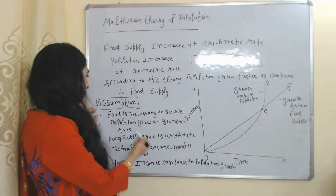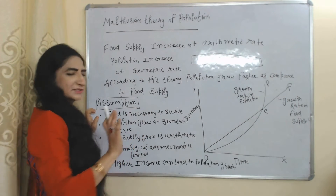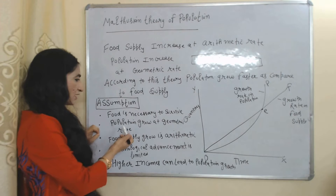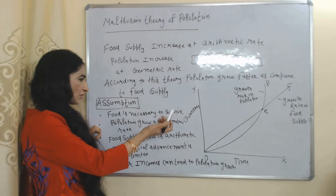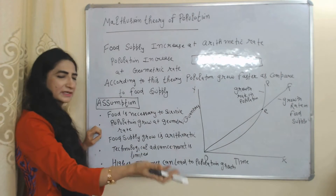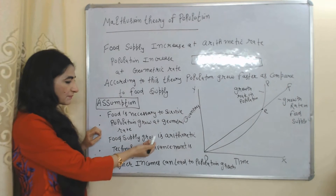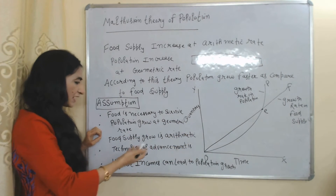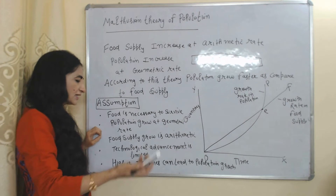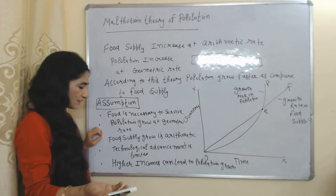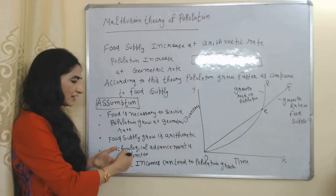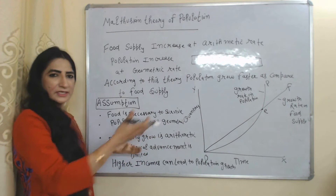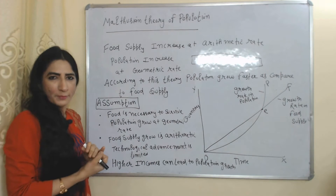The assumptions of this theory are: food is necessary to survive, population grows at a geometric rate, food supply grows at an arithmetic rate, technological advancement is limited, and higher income can lead to growth in population.